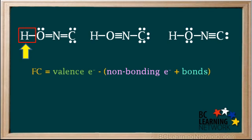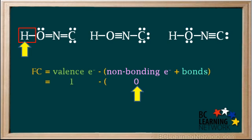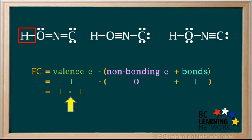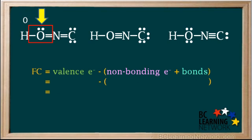We'll start with the hydrogen atom on structure 1. Hydrogen has one valence electron, and there are no non-bonding electrons around it, and one bond is attached to it. Therefore, its formal charge is 1 minus 1, which equals 0. We'll keep track of hydrogen's formal charge by writing above the H atom in this molecule.